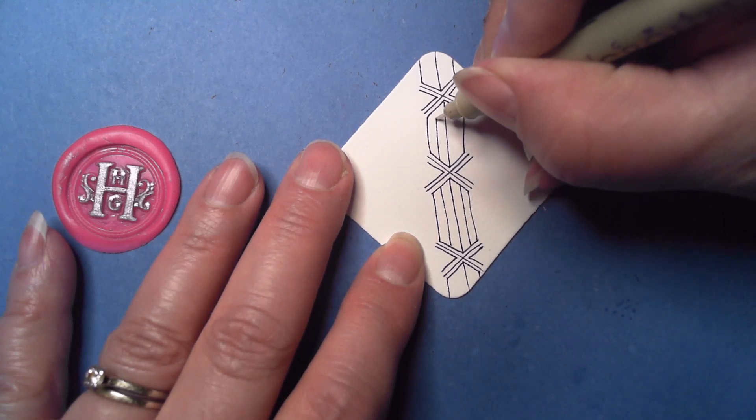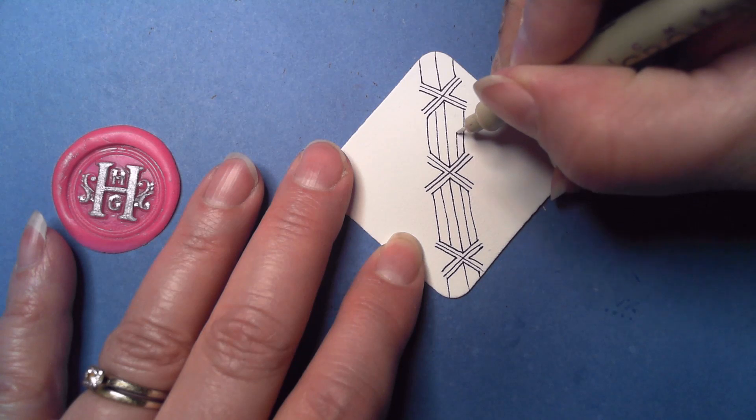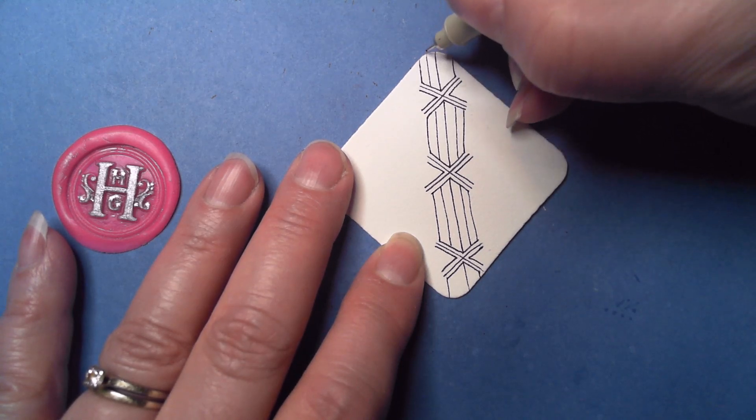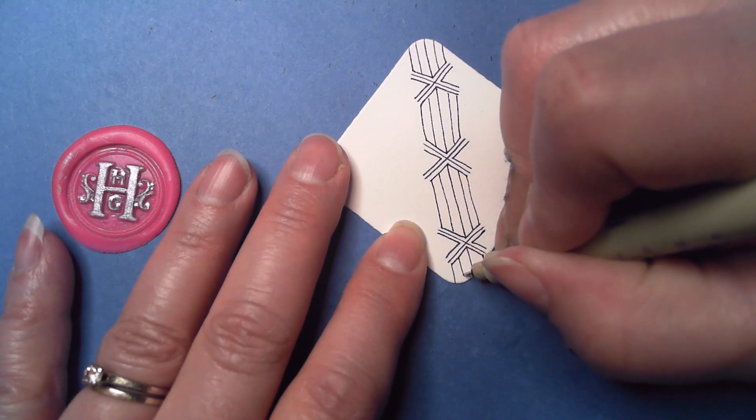We have these nice big spaces and we're going to divide those in half or close to it with just another straight line.